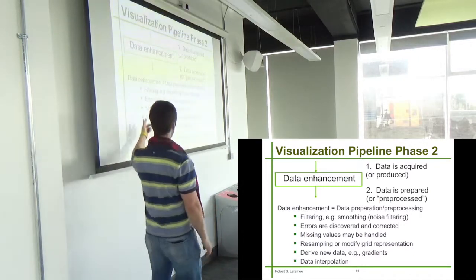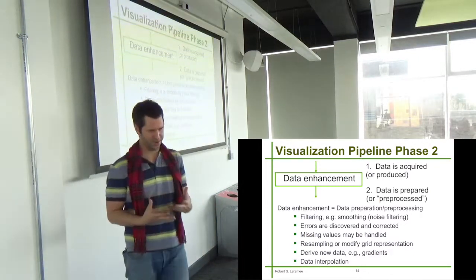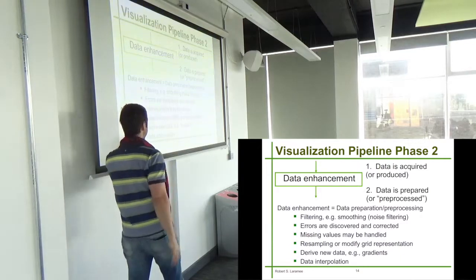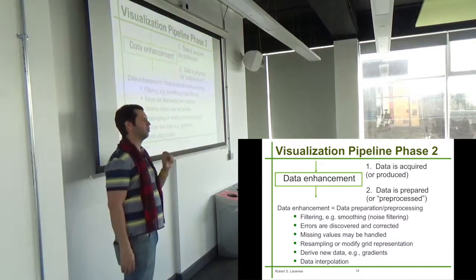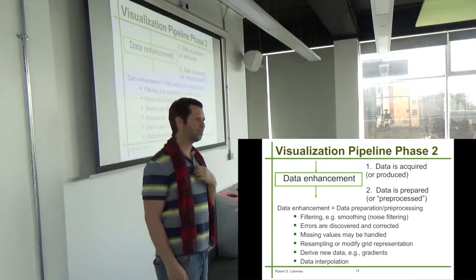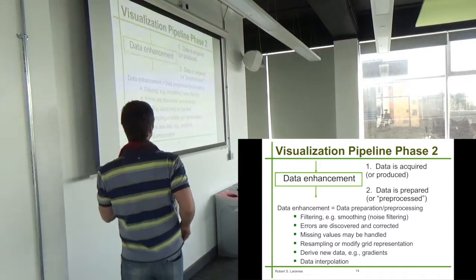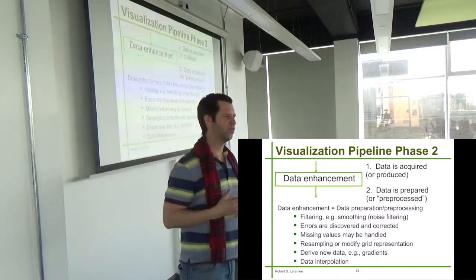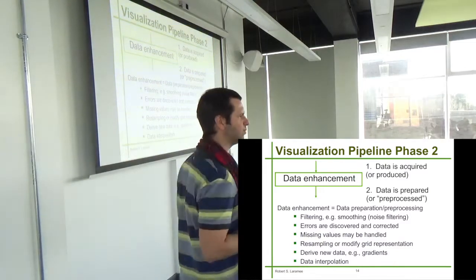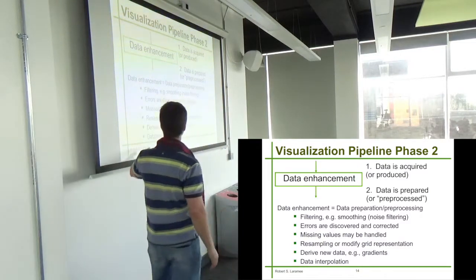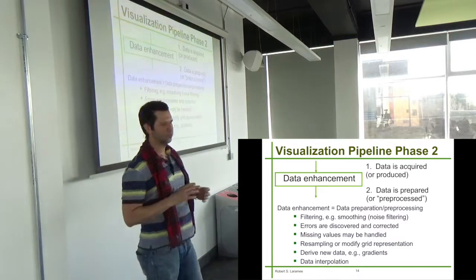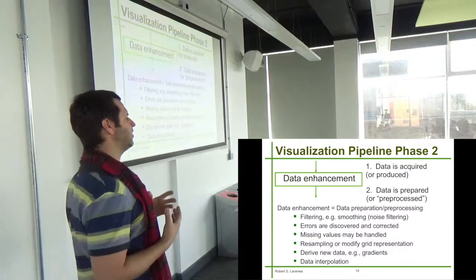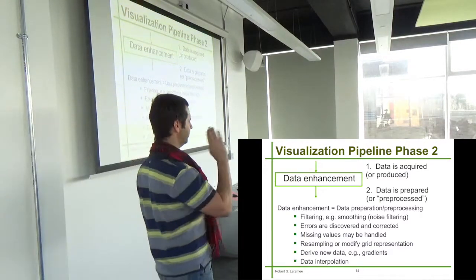There are often missing values, so you have to decide how to handle them. If data is stored on a grid, you may want to modify the grid representation. You may also want to derive new data like gradients, averages, mins and maximums, and similar statistics. We also talk about data interpolation — filling in values in between other values — and we have slides dedicated just to that topic later on.